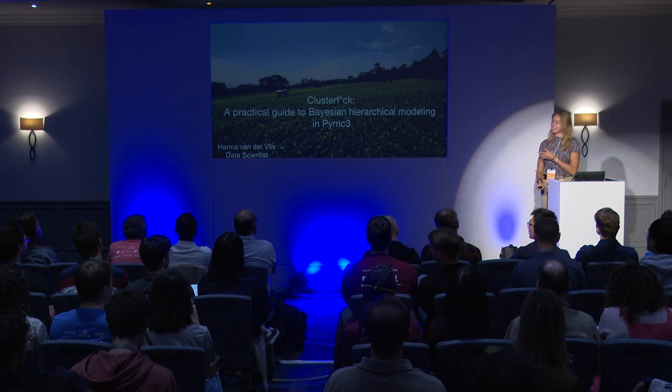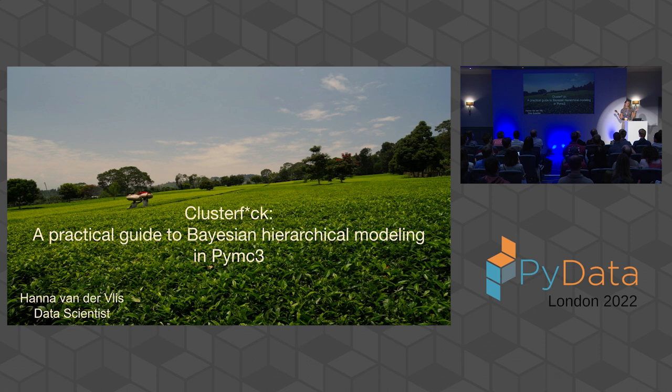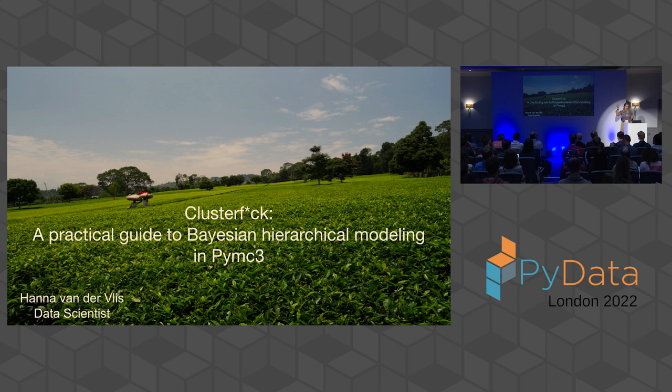Hi everybody, thank you for coming. My name is Hanna van der Vlis. I'm a data scientist at Apollo Agriculture. This talk is a practical guide to Bayesian hierarchical modeling in PyMC3. PyMC4 is actually out — I haven't used it yet, so this is in PyMC3.